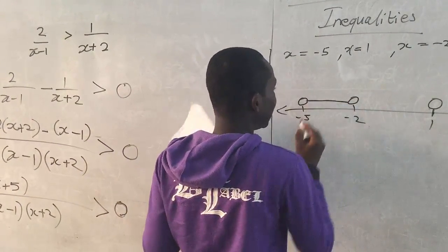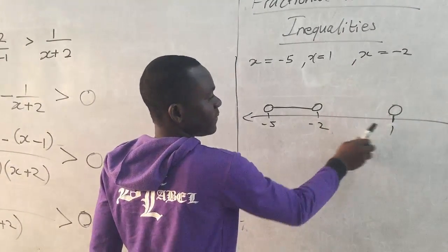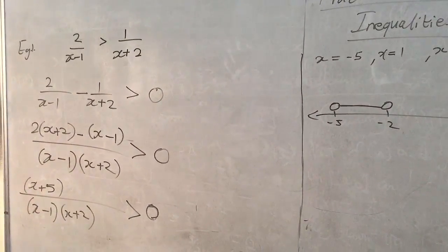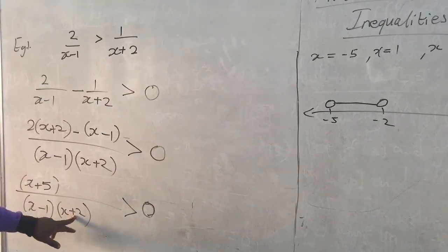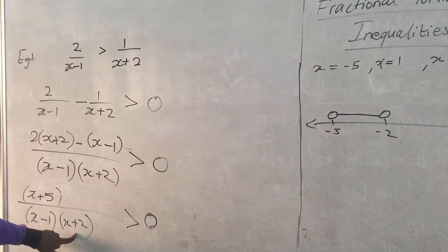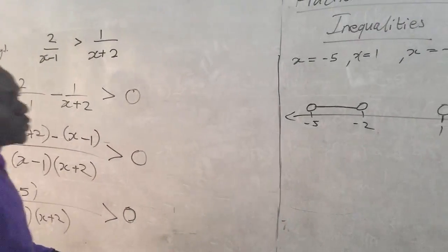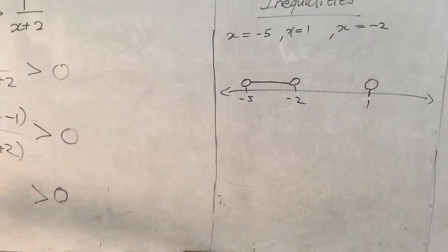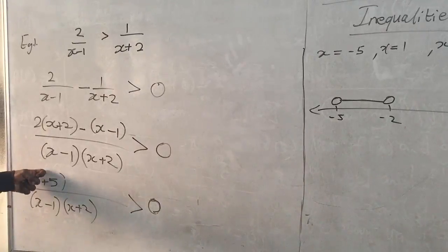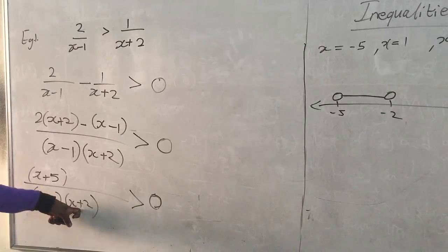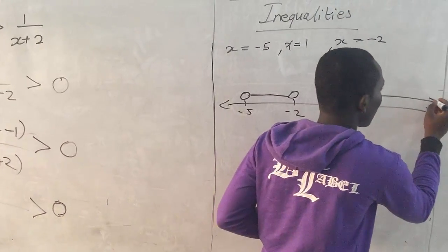So the interval (negative 5, negative 2) satisfies the inequality. Now testing between negative 2 and 1 — let's pick zero. The numerator factor (0+5) is positive; denominator factors give (0−1) negative and (0+2) positive. A positive divided by a negative gives a negative, which cannot be greater than zero — this interval is excluded. Testing greater than 1 — let's pick positive 10. All factors are positive, so the result is positive and greater than zero — this interval also satisfies the inequality.